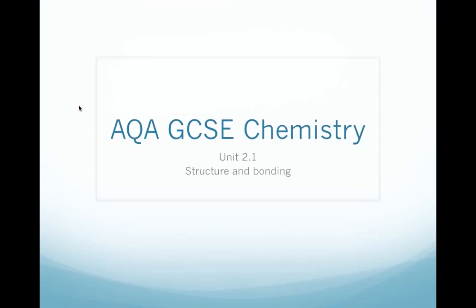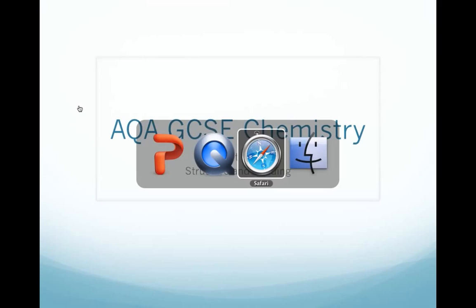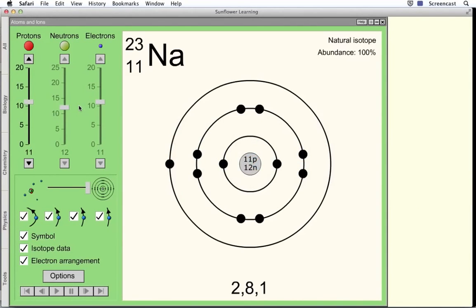But let's start by reviewing atomic structure. Here we have the structure of a sodium atom. You can see it has a central nucleus containing protons and neutrons. Remember, protons are positive, neutrons have no charge, they're neutral. And there are electrons orbiting around the outside of the atom in so-called shells. The first shell can contain a maximum of 2 electrons, the second shell contains a maximum of 8 electrons, and the third shell also a maximum of 8 electrons.